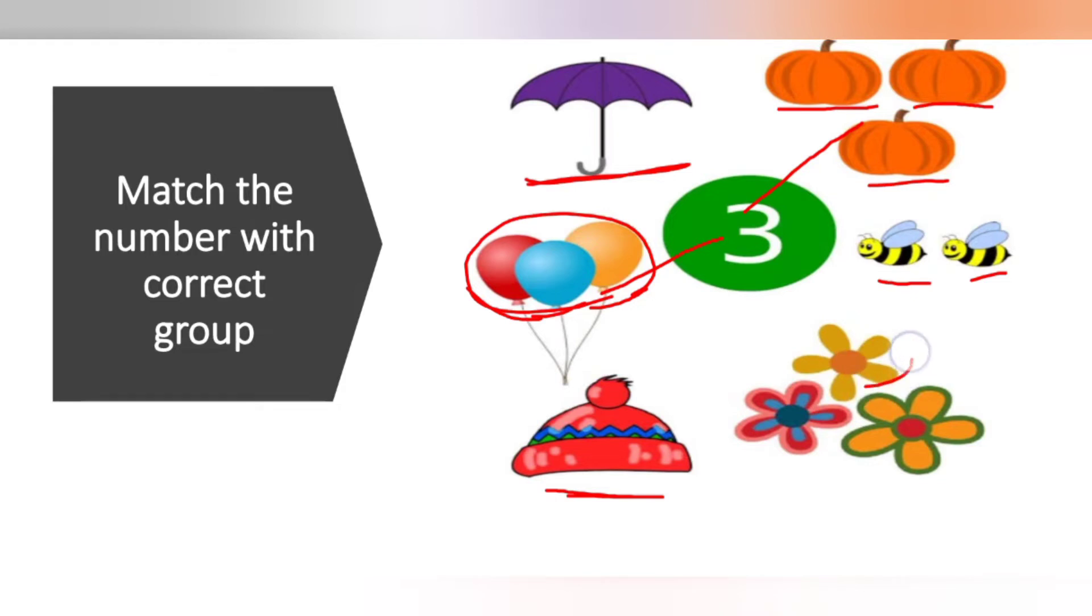Flowers: 1, 2, 3 flowers are there. Right, so we match them. So 3 groups, 3 objects. Okay.